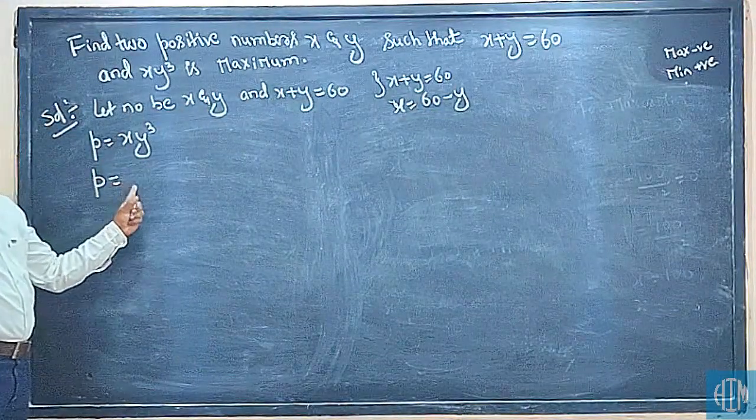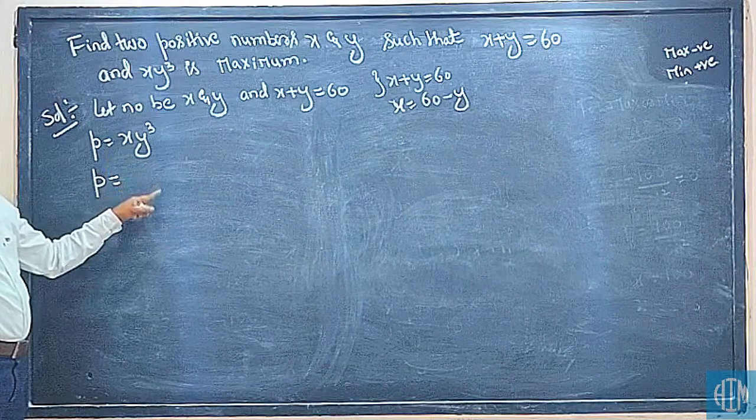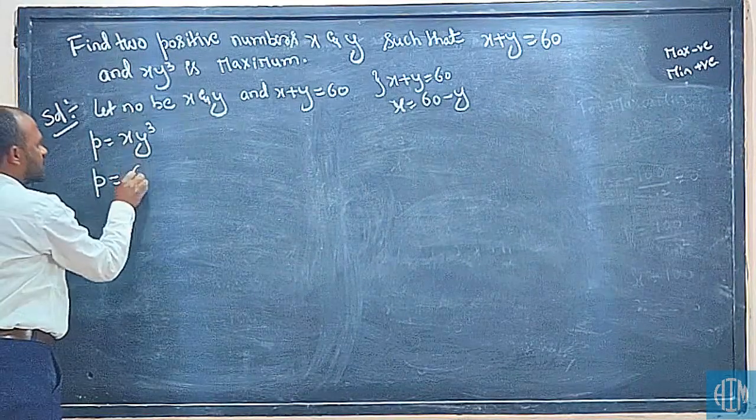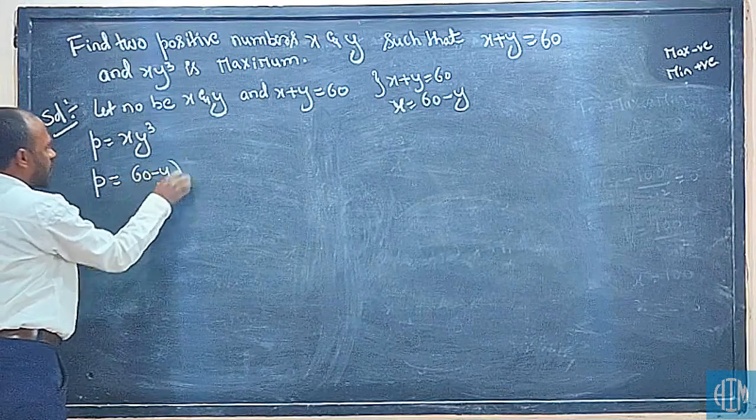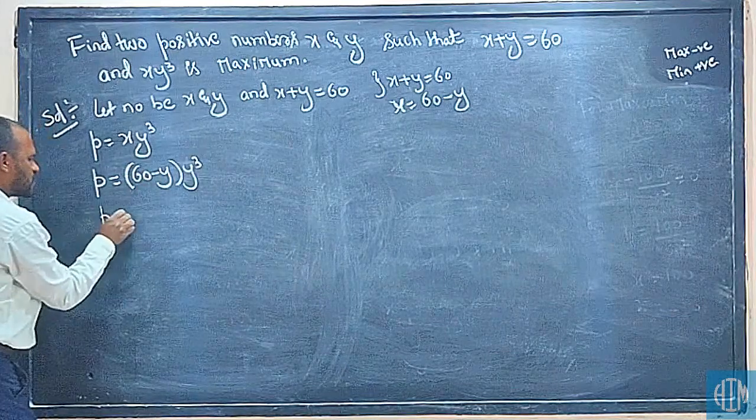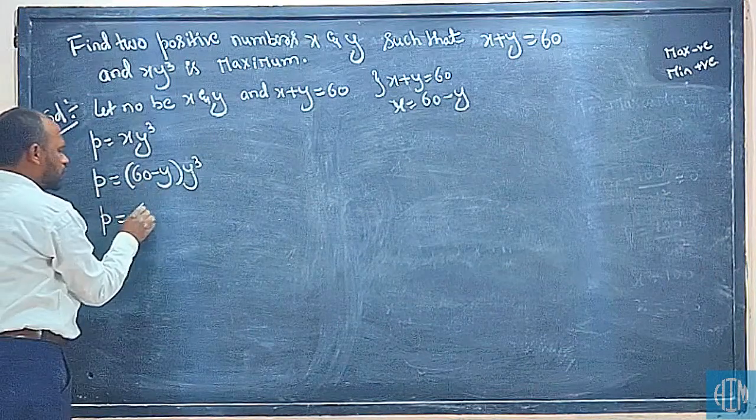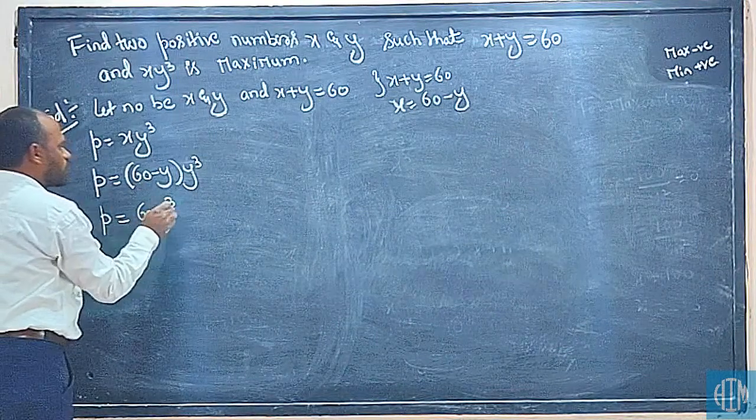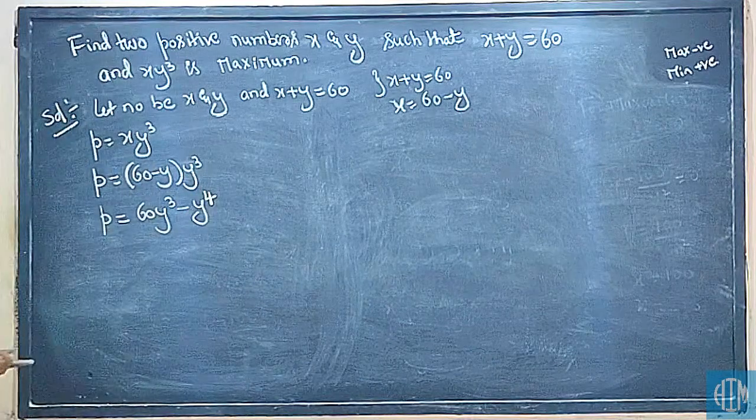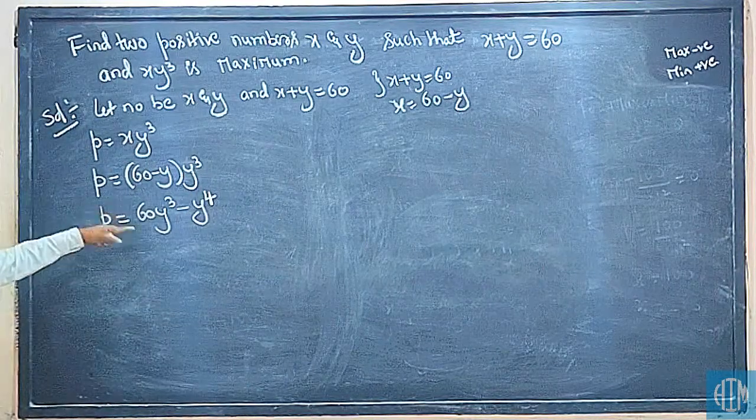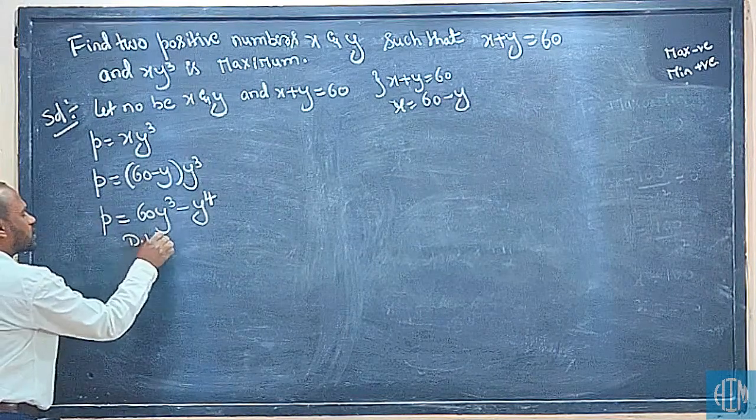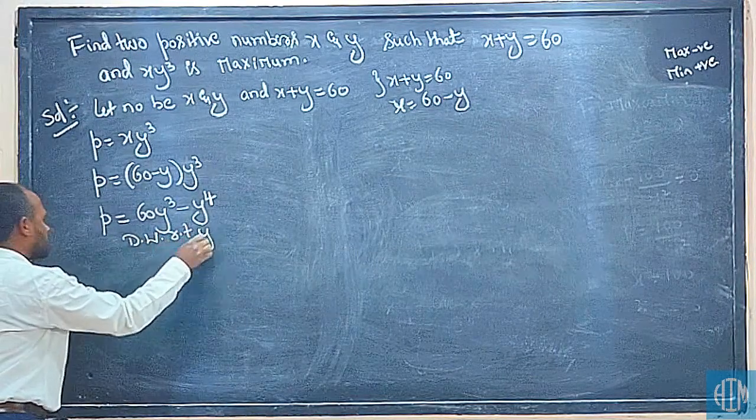Now substitute x value. P equals x times y³, so P is equal to 60y³ minus y to the power of 4. Now we are going to differentiate with respect to y.